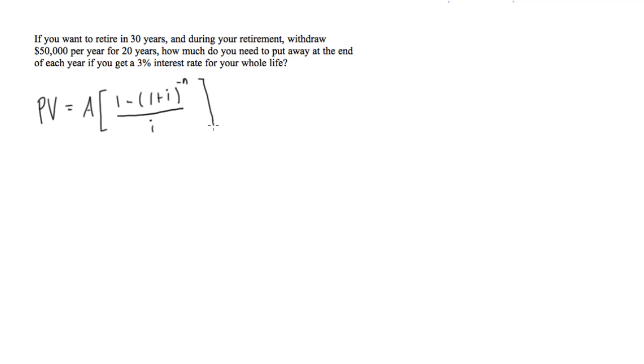We have present value - this is how much we're going to need at the beginning of retirement. This is how much we're withdrawing each year, 3% interest rate, and for retirement we plan on being retired for 20 years, so that will be n = 20.